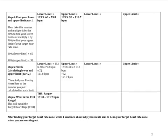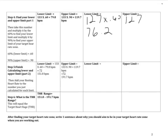Now I want to take 127 and multiply it by 0.60, which is 60% of my maximum heart rate. So 127 times 0.60 for me is 76.2. If I want to find my upper limit, or 90% of my maximum heart rate, I take the number 127 and multiply it by 0.90, which leaves me with 114.3.